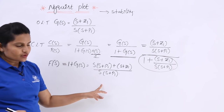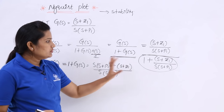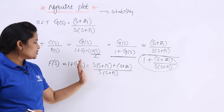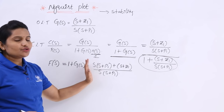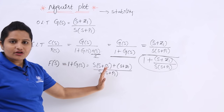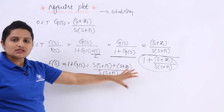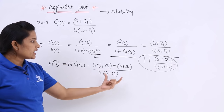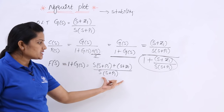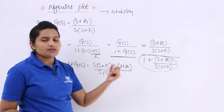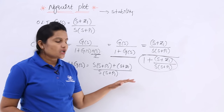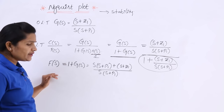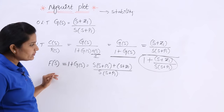We define F(s) = 1 + G(s). So 1 + G(s) with H(s) = 1 is considered as F(s). The denominator becomes F(s) = [s(s + p1) + (s + z1)] / [s(s + p1)].